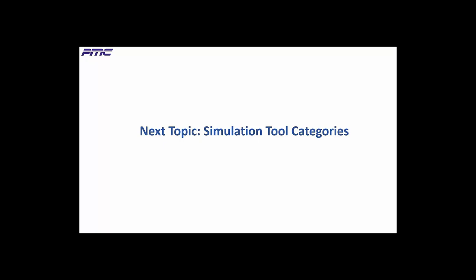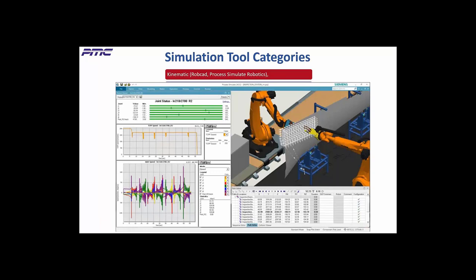Simulation tools fall into several categories. Since people can often be unaware of the differences among the tools or even the existence of them, we'll cover the facets of the major categories. Kinematic tools like Siemens Technomatics Robcat and Process Simulate Robotics let you analyze the real-time motion of robotic work cells, optimize cycle times, optimize welding sequences, and increase process quality.